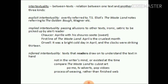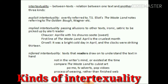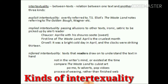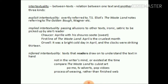There are three kinds of intertextuality. The first is explicit intertextuality — overtly referred to, such as T.S. Eliot's 'The Wasteland' notes referring to 'The Golden Bough,' Wagner, etc. The second is implied intertextuality — a passing allusion to other texts, ironic or satiric, to be picked up by an alert reader, as in Chaucer.